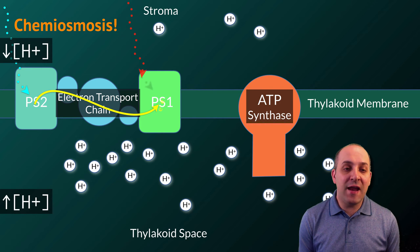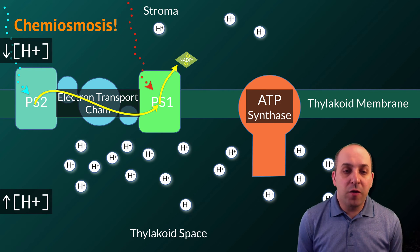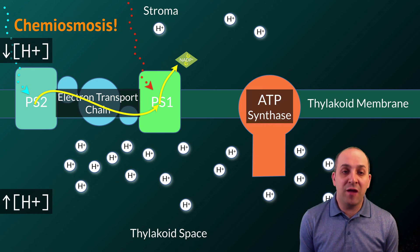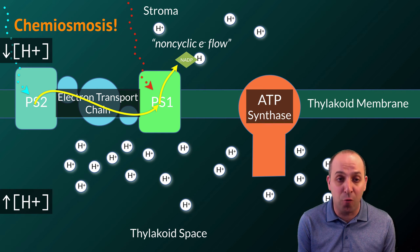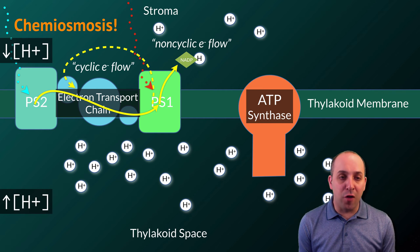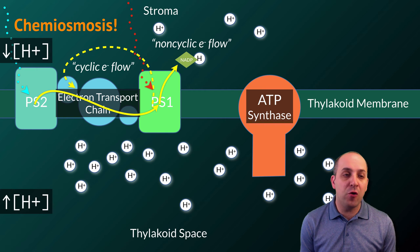When photons of light interact with photosystem 1, the chlorophylls in photosystem 1 will produce high-energy electrons that can take one of two paths. In a non-cyclic electron flow, the electrons are used to reduce the NADP plus electron carrier into its reduced NADPH form. In cyclic electron flow, the electrons move from photosystem 1 back into the electron transport chain, continuing the pumping of protons.